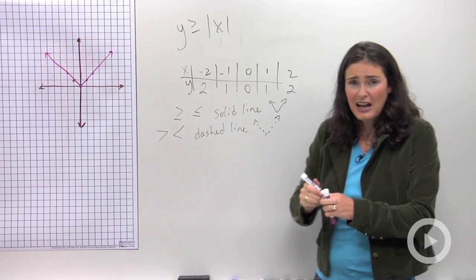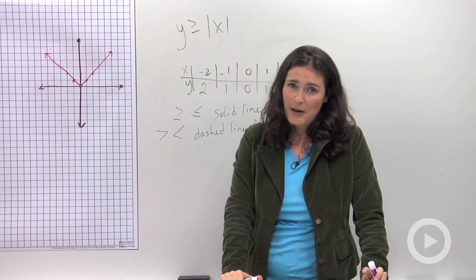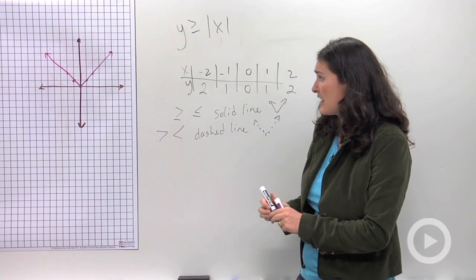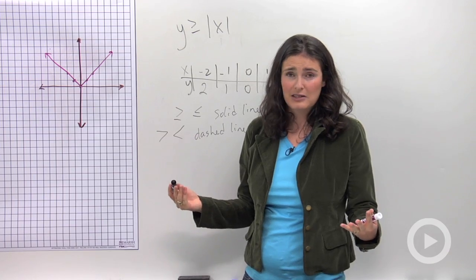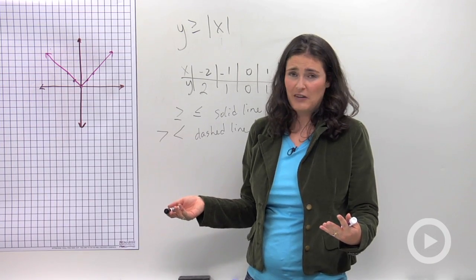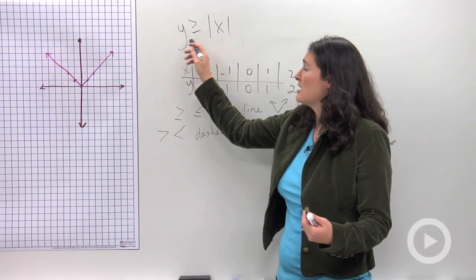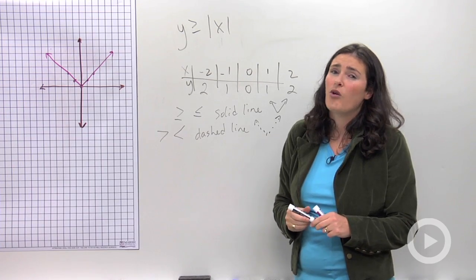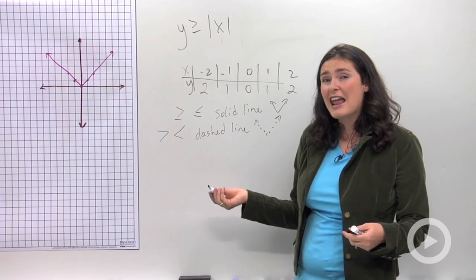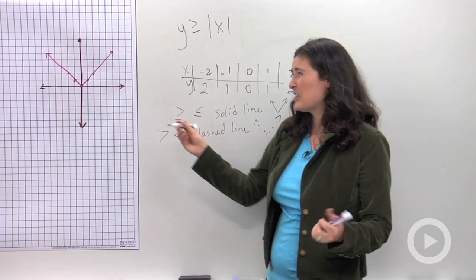The last thing you know about inequalities is that there's some shading that happens. The way you pick the shading is you get to choose any point you want to, any point that's not on your absolute value v. You substitute in your x and y pairs and see if you get a true inequality or not. You're going to shade the parts that are true. Here's what I mean.